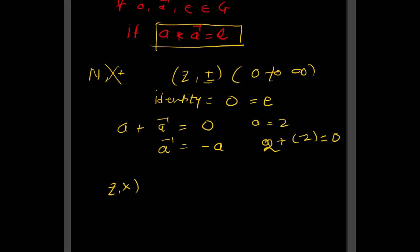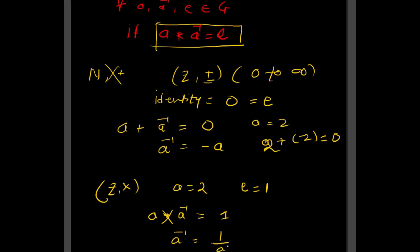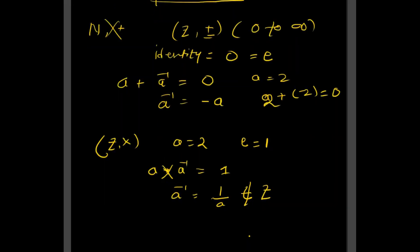Now let us check Z with multiplication. Here, a multiplied by a-inverse should equal the identity element 1. So a-inverse equals 1/a. But 1/a does not belong to Z — for example, if a equals 2, then 1/2 is not an integer. Therefore, Z with multiplication does not satisfy the inverse property.